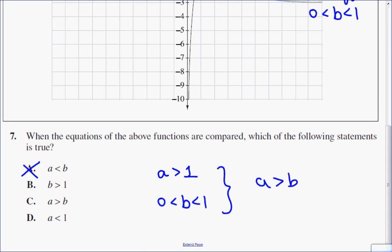The next option is that b is greater than 1. You can see that b is in between 0 and 1, so that's not the option. Looks like option number 3 is correct.